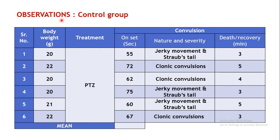These are the observation tables. For the control group, the animals are numbered from 1 to 6 and their body weights are recorded, all found to be within the required range. The treatment given to these animals is PTZ — only pentylenetetrazole has been administered. After administration of PTZ, the onset of convulsions is noted in seconds for each animal. The values range from approximately 55 to 75 seconds. The nature and severity of the convulsions are also noted.